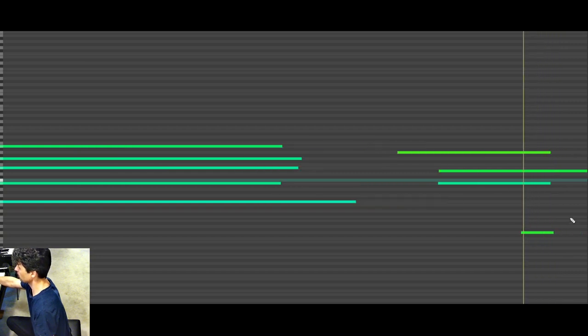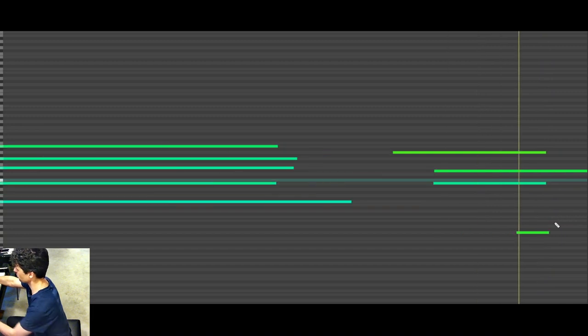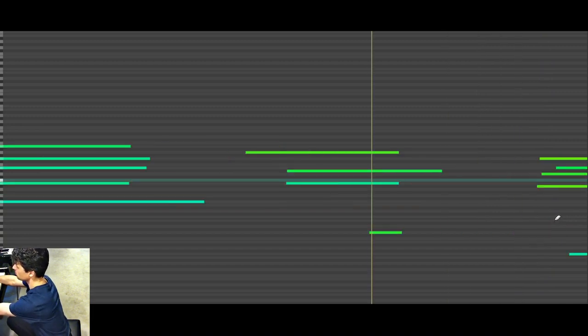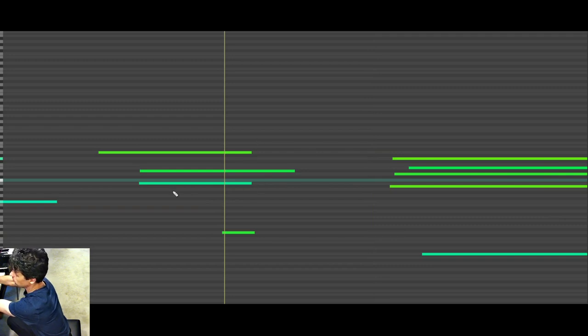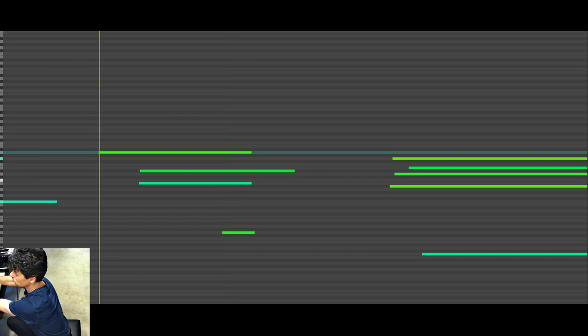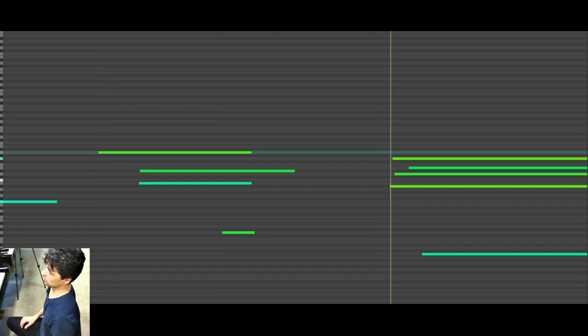So my left hand plays this G followed by - I'm not quite sure why it's not moving, let's do it this way - okay so that's my first note, this is my second note, and that here is my final chord, my goal point.